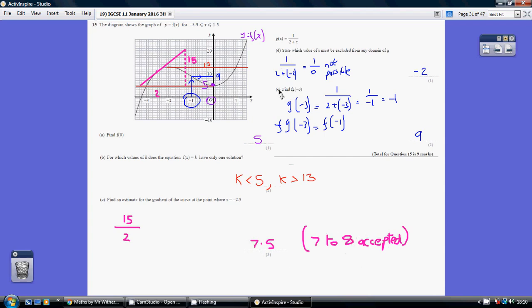Part d and e, I think these are actually, well not easier, it's still a tricky question, but these are doable. State which value of x must be excluded from any domain of g. What we're saying here is what value of x will not give us a solution. When you divide by 0, you'll see on your calculator that you get not possible, so you'll get maths error. So how would we make this denominator 0? Well, x would have to be minus 2.